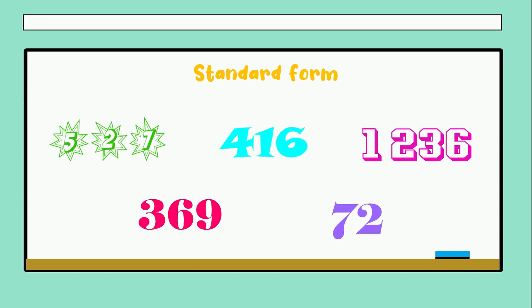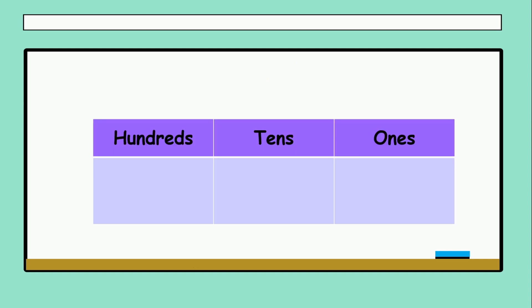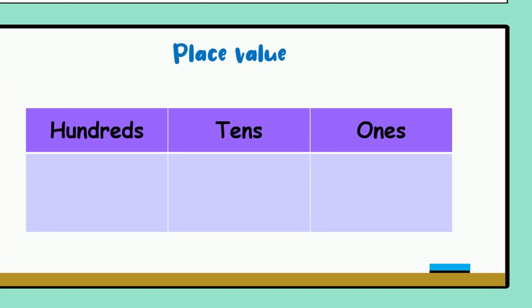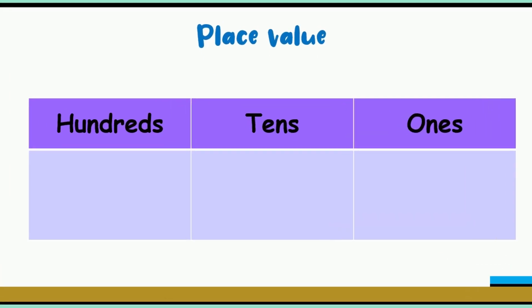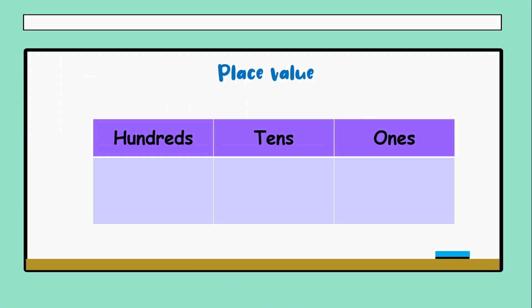We will work with the next one — place value. We have three different columns. The first is ones or units, the second is tens, and the third is hundreds. We have to locate the numbers in the specific place, because it's not the same when I locate a one in tens versus ones. When I locate one in tens, that means ten. But if I locate one in ones, that means one. That is the difference.